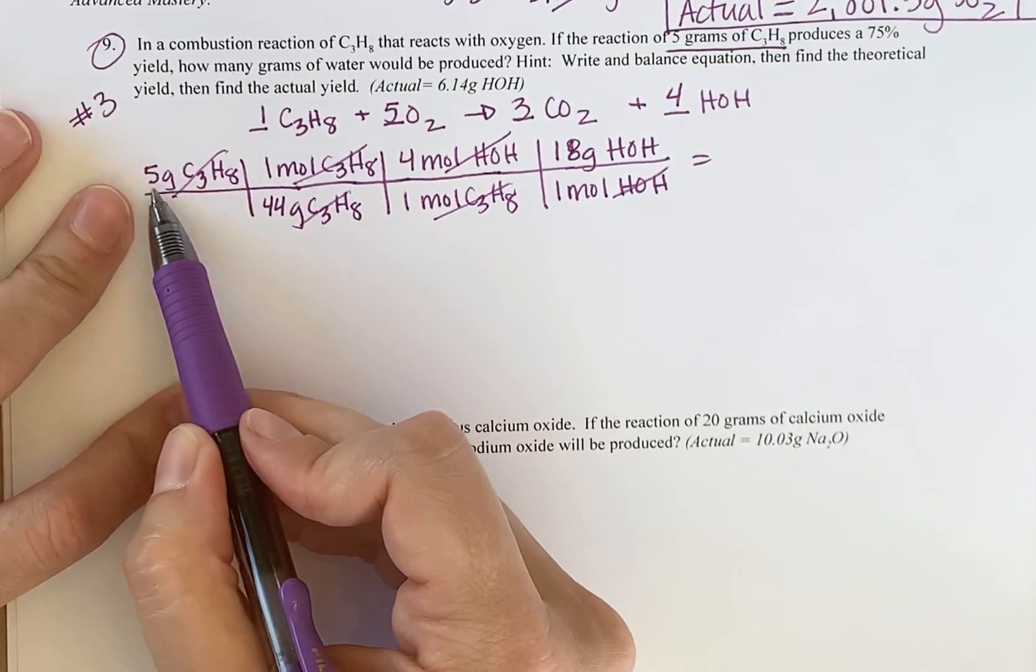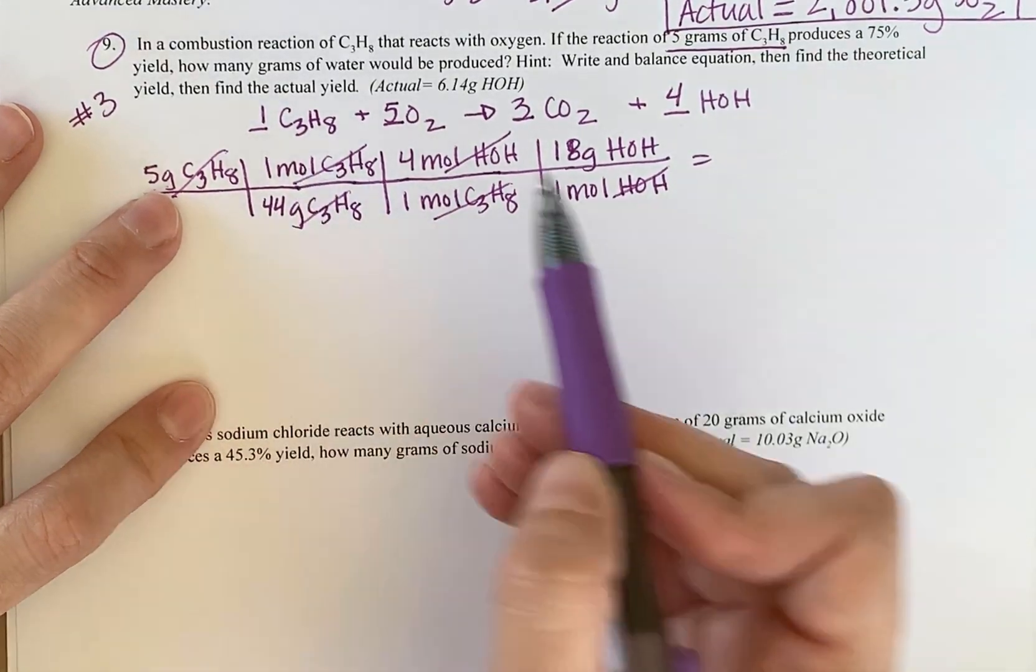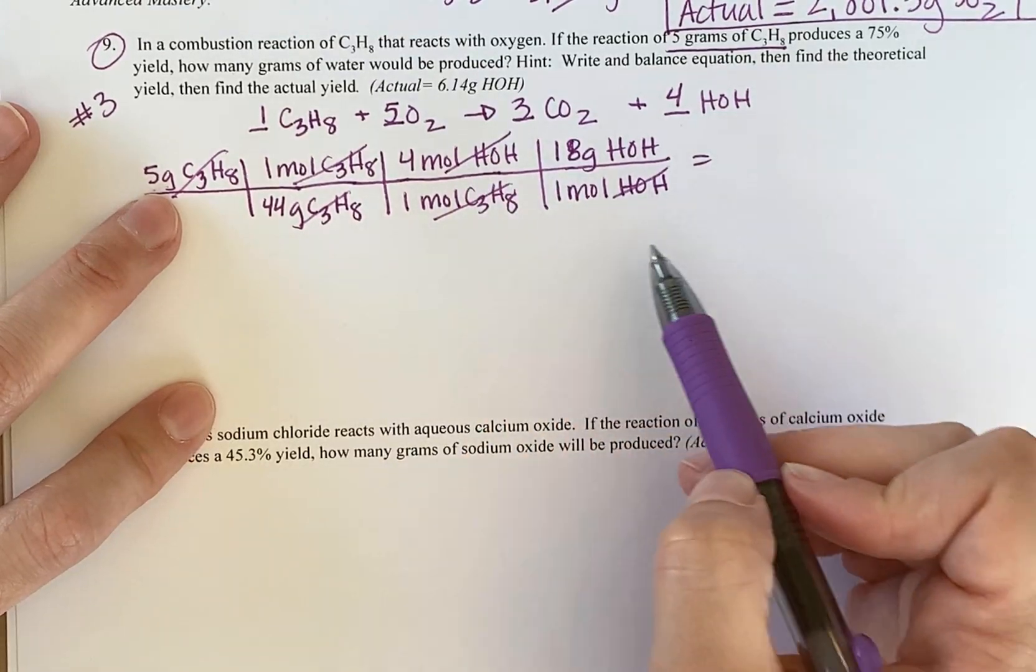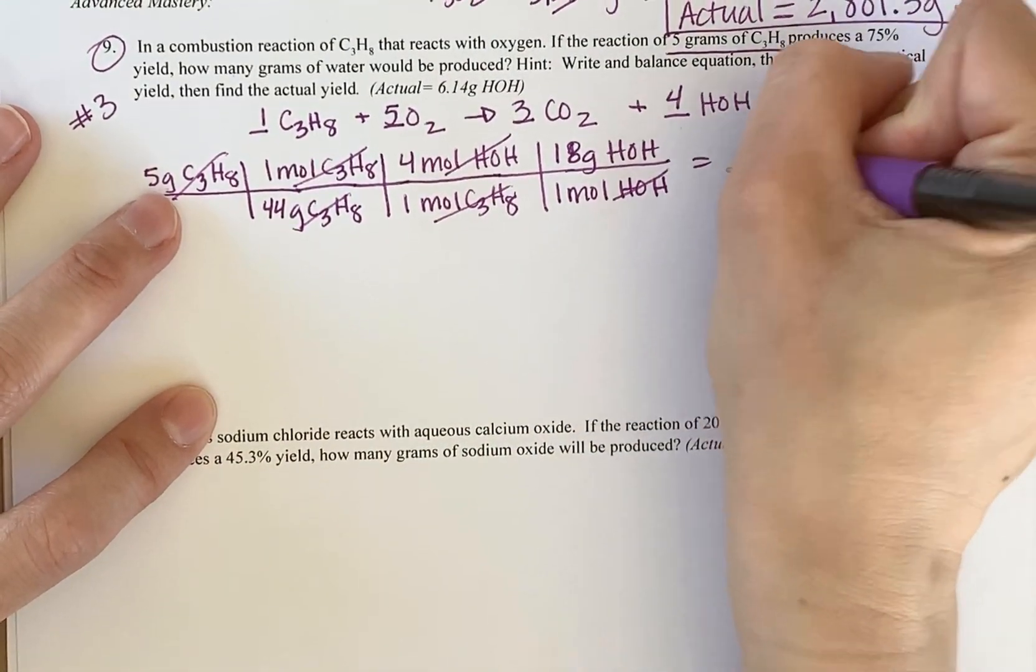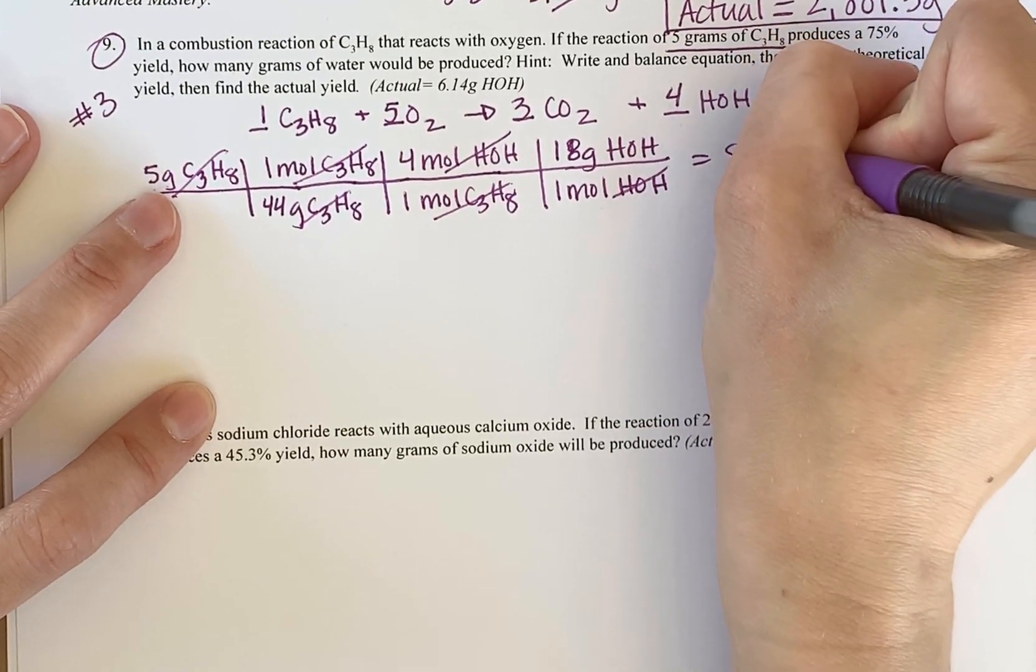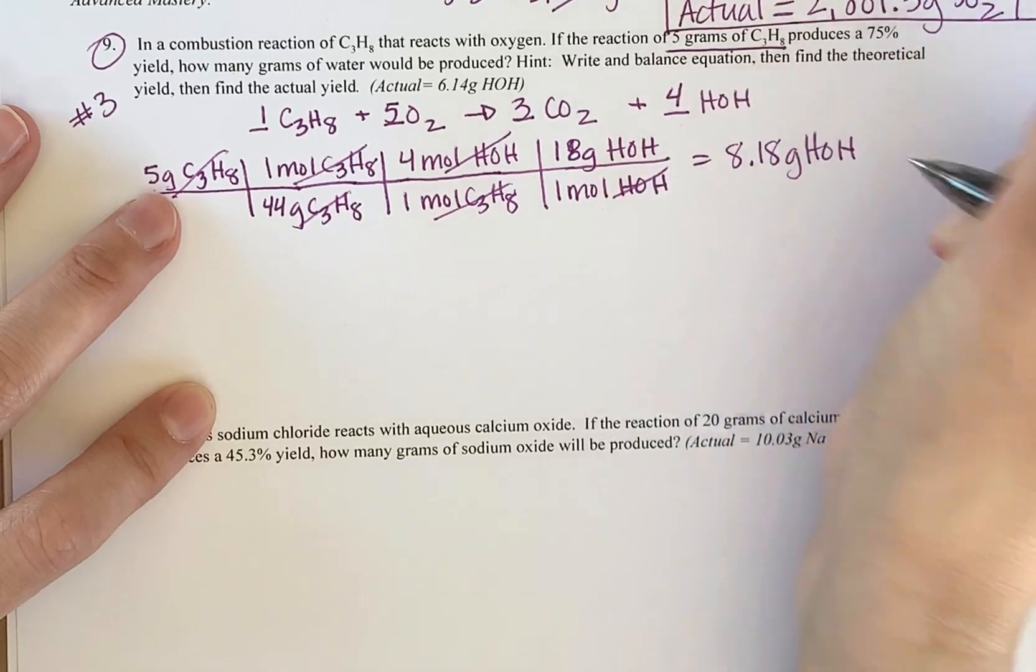Okay. So five grams divided by 44, hit enter, multiply by one, hit enter, divide by one, hit enter, multiply by four, hit enter, divided by one, hit enter, multiply by 18, gives me my theoretical yield of water as 8.18 grams of HOH.